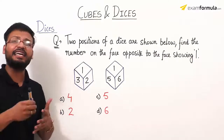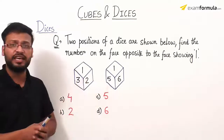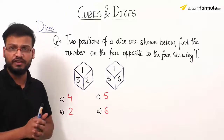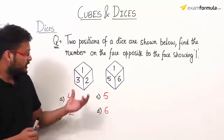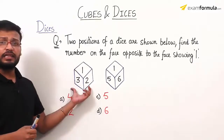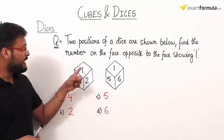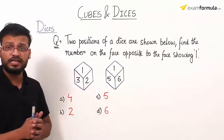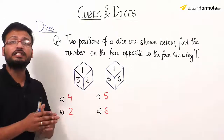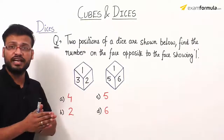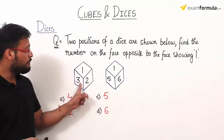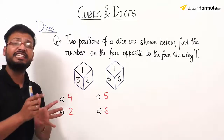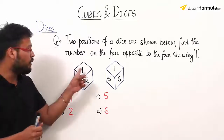One dice has been shown from two different angles — two different positions. In the first figure, number 1 is on the top surface. Its adjacent two faces show the numbers 3 and 2. These are adjacent faces to the number 1.